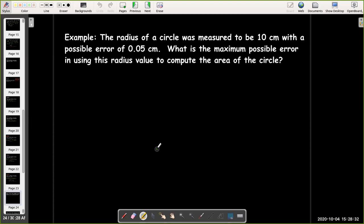So, let's see how this could help us. Suppose we have the radius of a circle. It's measured to be 10 centimeters. With some margin of error, 0.05 centimeters. What is the maximum possible error in using this radius value to compute the area of the circle?